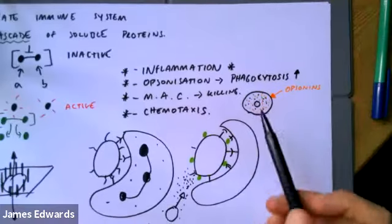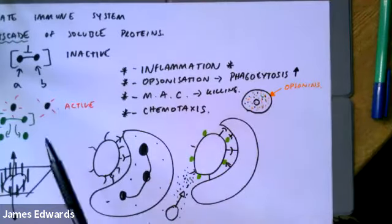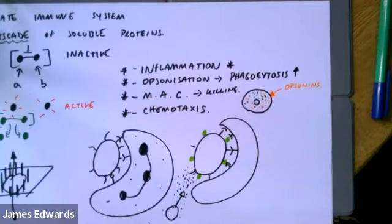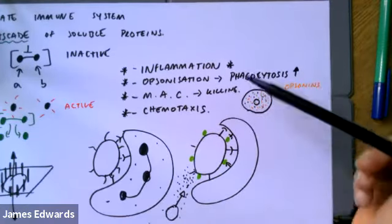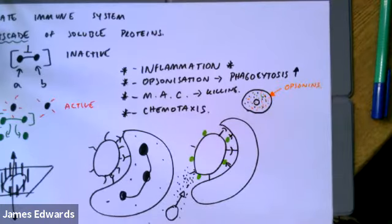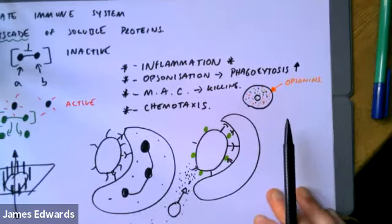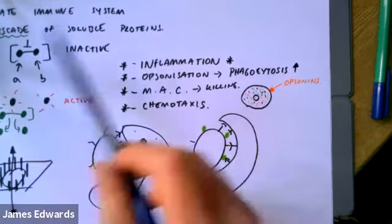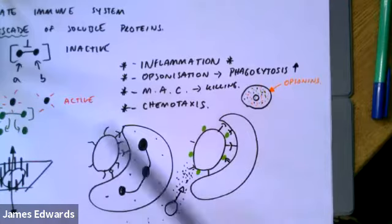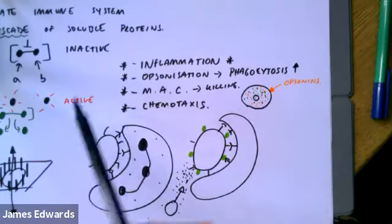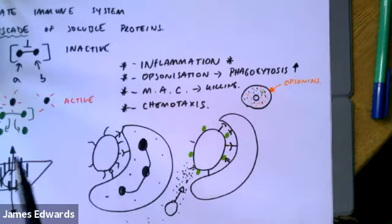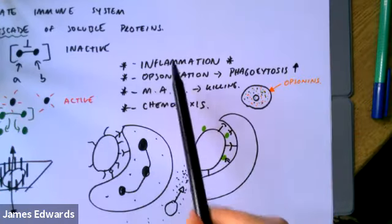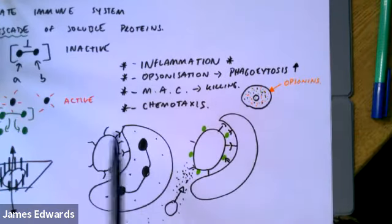It's worth reiterating this, because sometimes people get so lost in the complement cascade that they forget the purpose of complement in the first place. There are certain hereditary diseases where you're born without parts of the complement system, and in some cases you're susceptible to recurrent infections because your body can't do these initial steps very effectively.